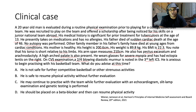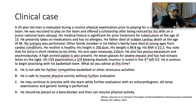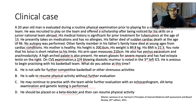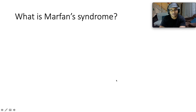He is anxious to begin practicing with his basketball team. What is your advice at this time as a treating physician? Is it A — he is not safe for further competitive basketball or any other strenuous activity? B — he is safe to resume physical activity without further evaluation? C — he may continue to practice with the team while further evaluation with an echo, slit lamp examination, and genetic testing is performed? Or D — he should be placed on a beta blocker and then can resume physical activity?